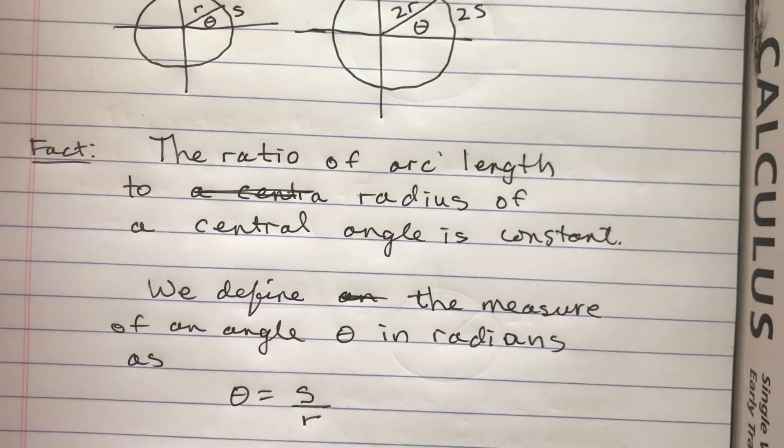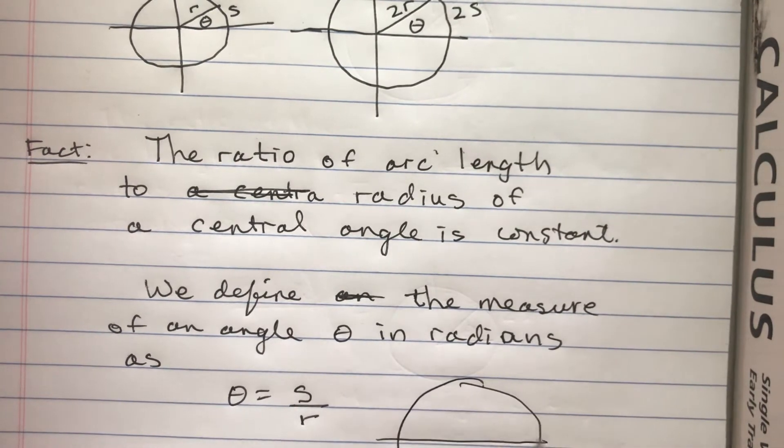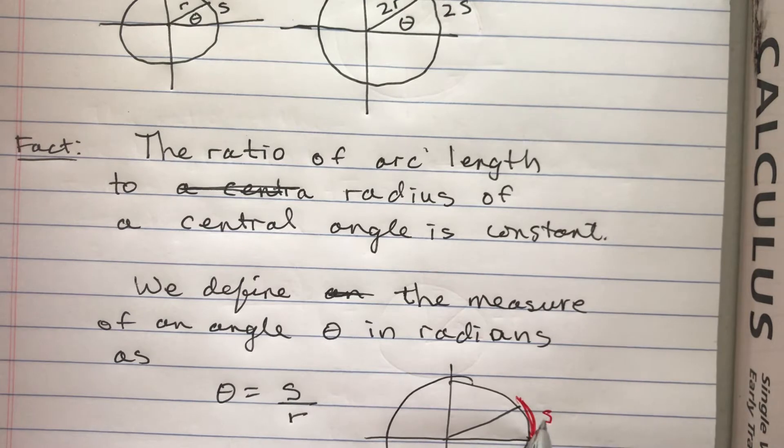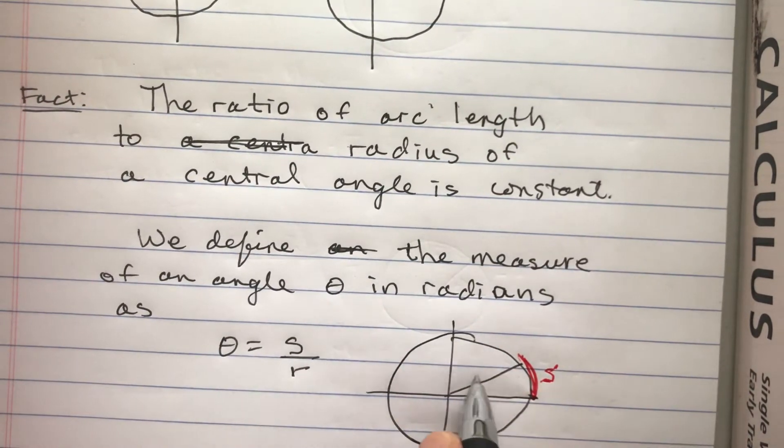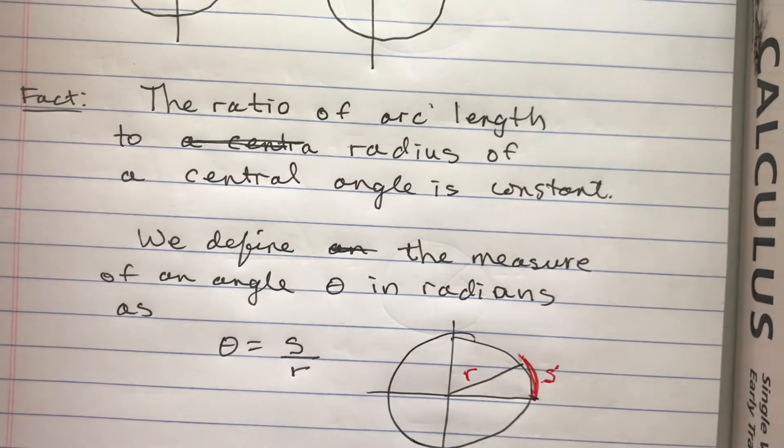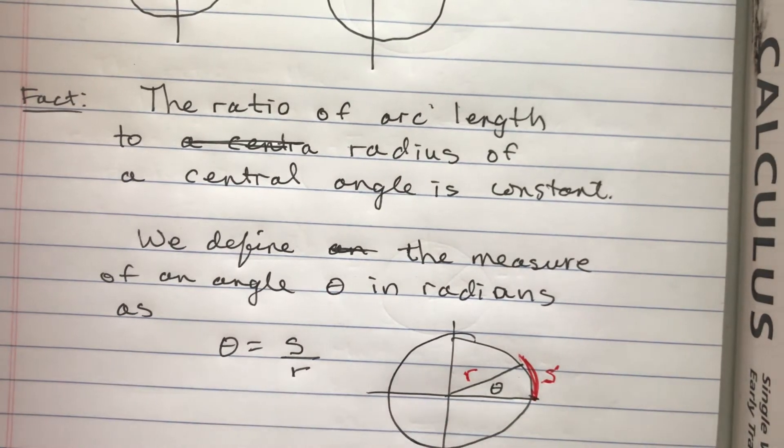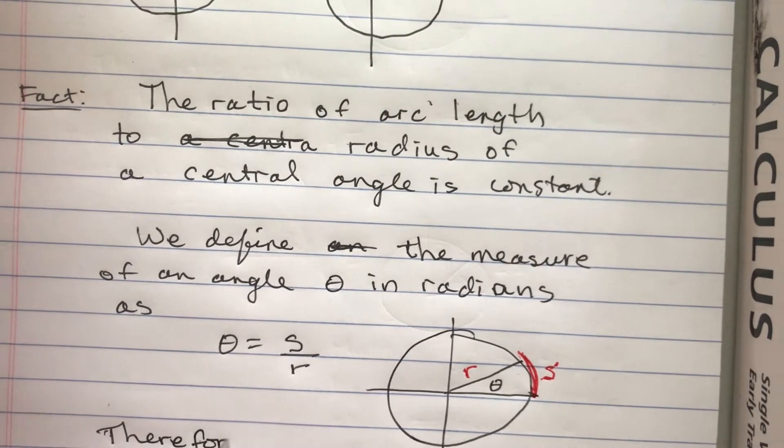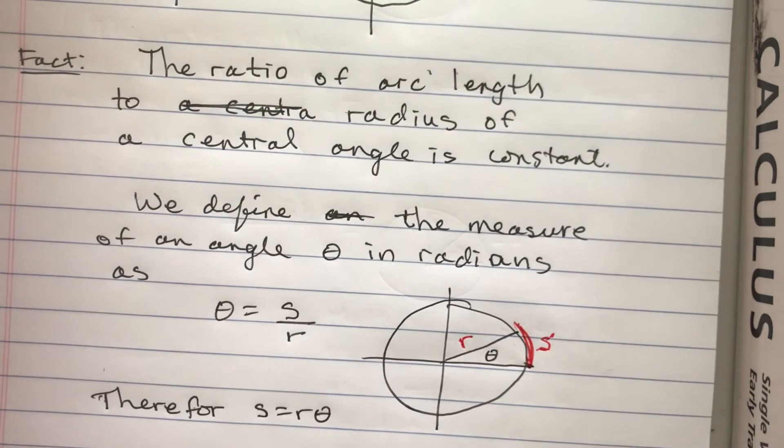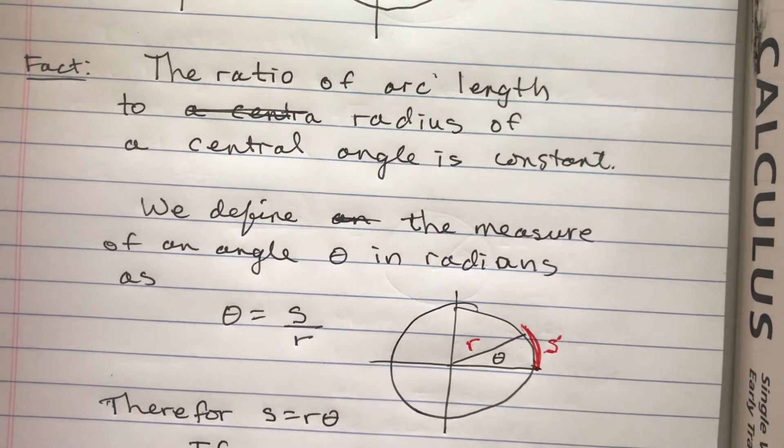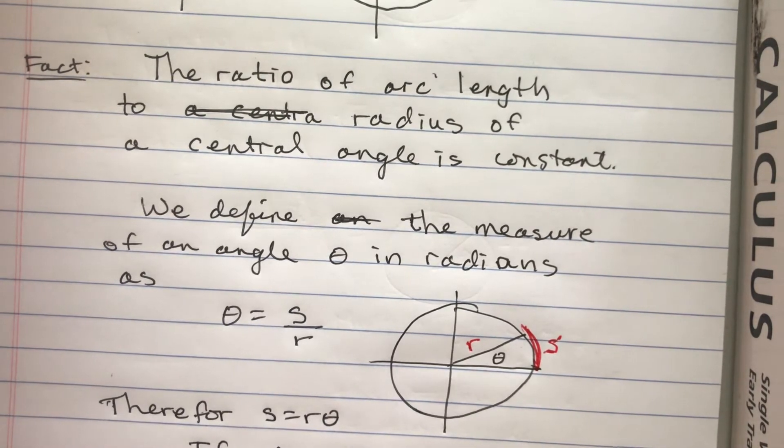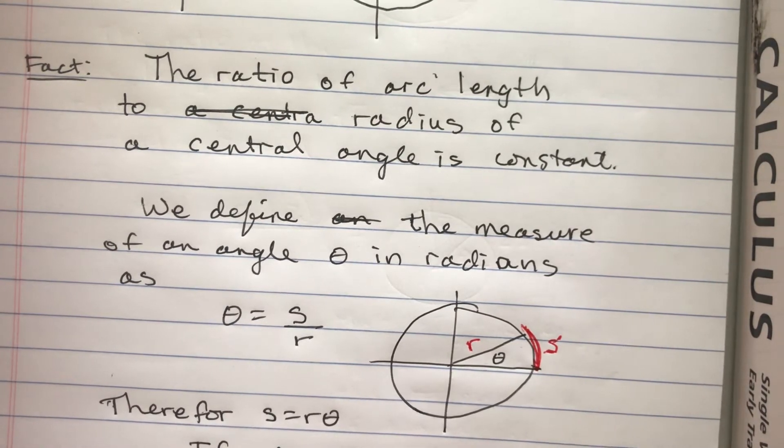So let me just make sure I have this all clear. S is actually this length right here of that arc and here's R is the radius. So we're going to take S divided by R and define that as theta. Therefore, if I multiply both sides by R, I get S equals R theta. If we use radians as units, then R equals one radian and S is just equal to theta.